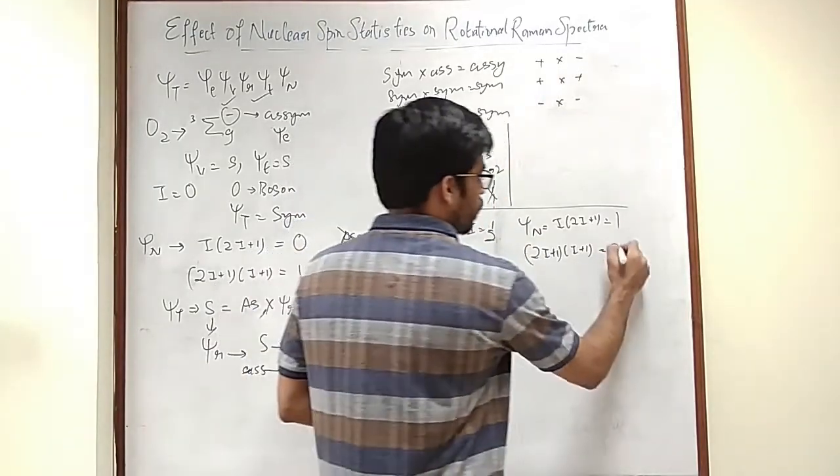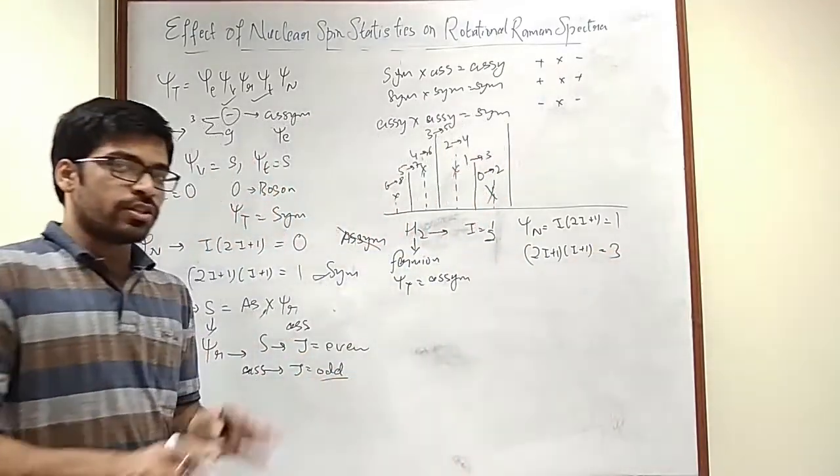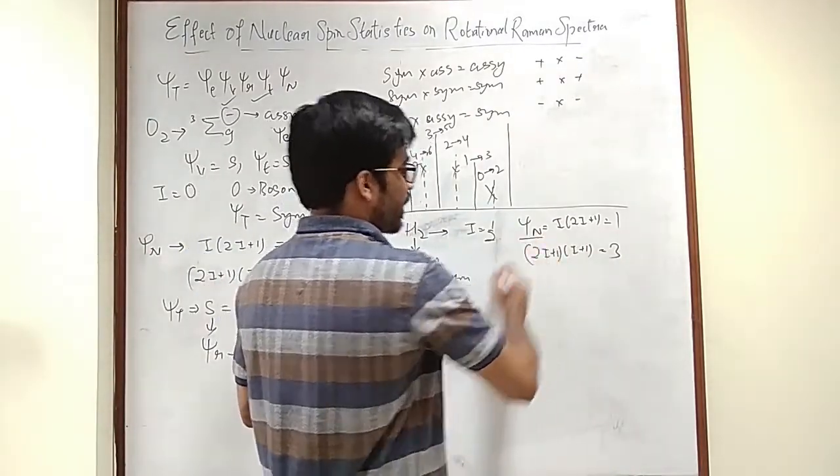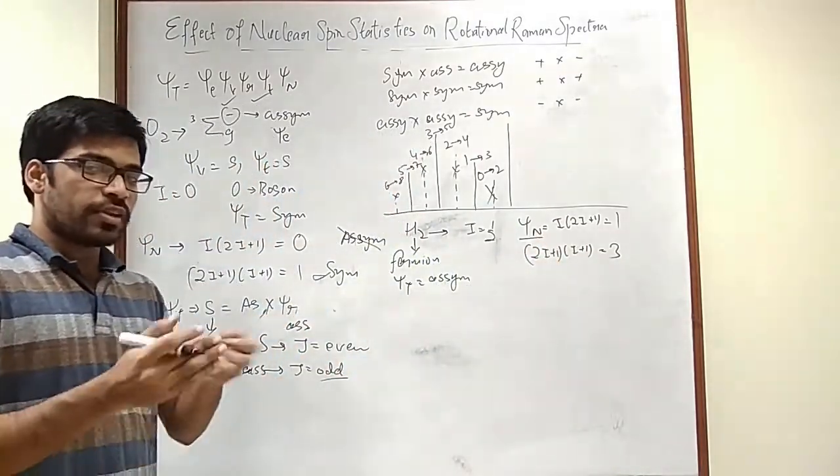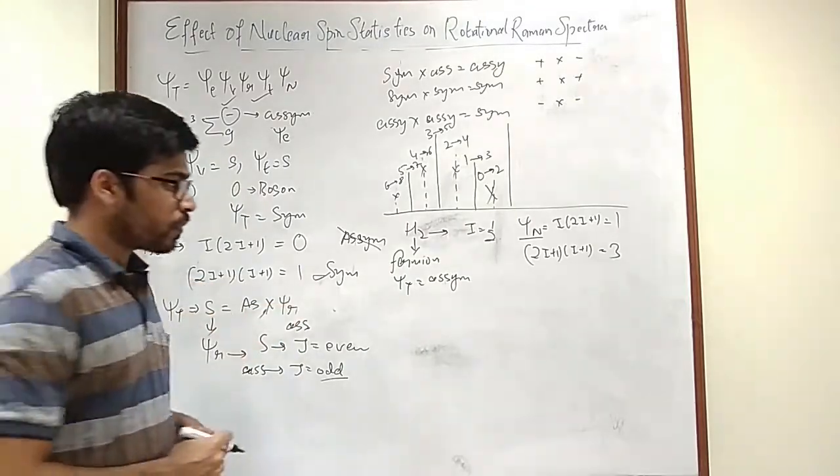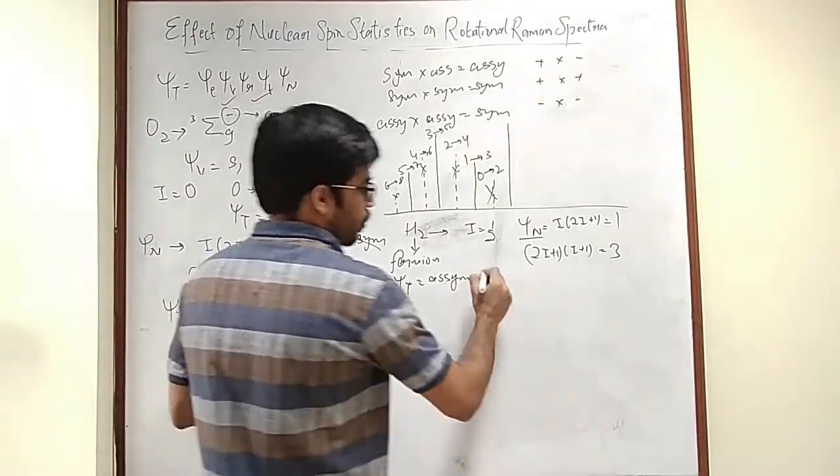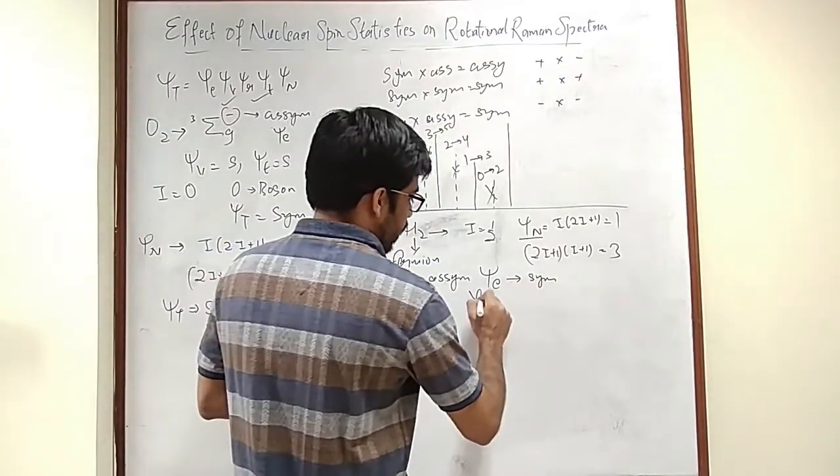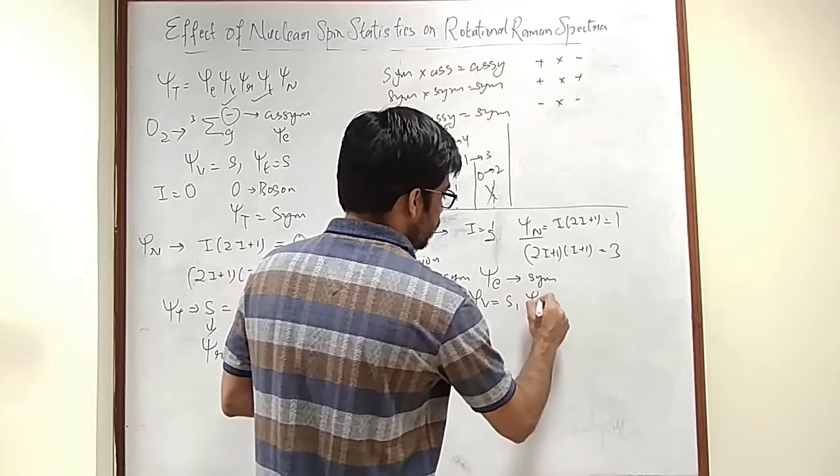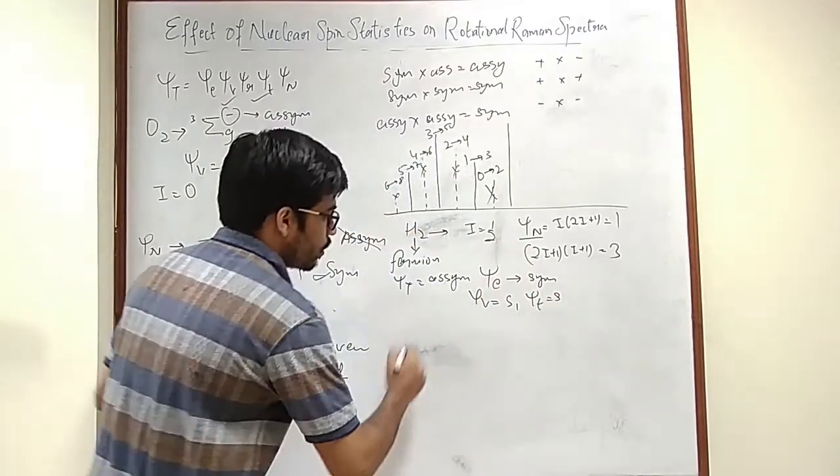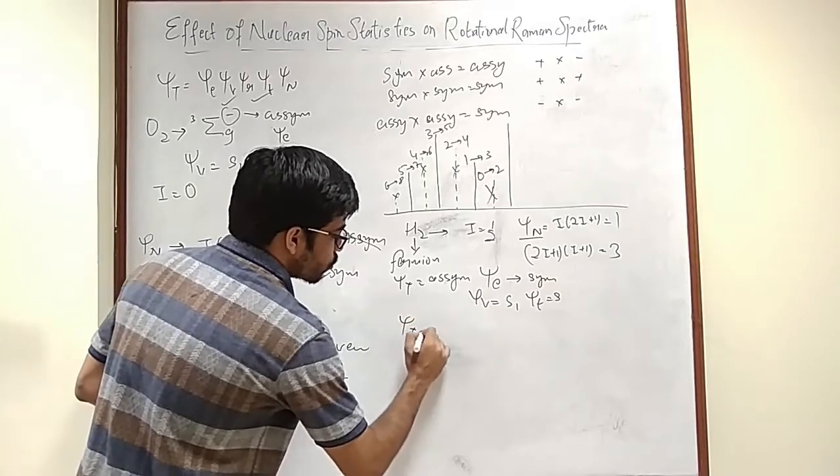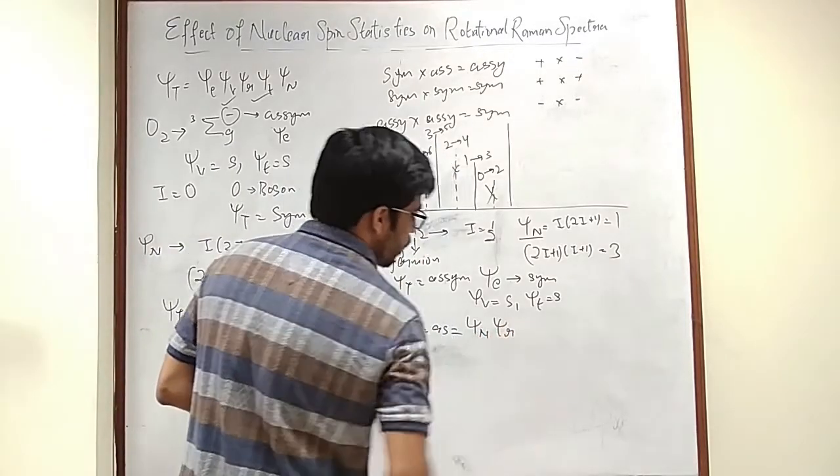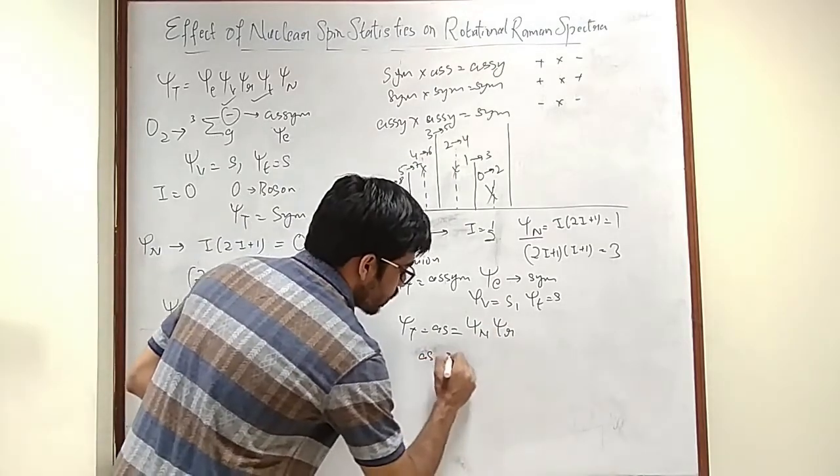None of them are zero. That means both are non-zero. You cannot define whether it is asymmetric or symmetric. It will have both parts, contribution from both. Psi electronic turns out to be symmetric. Psi vibration is already symmetric. Psi translation is already symmetric. So you want the molecule or the total wave function to be asymmetric via psi n and psi r.